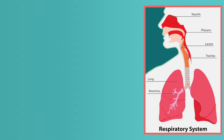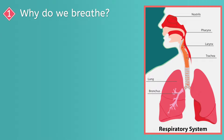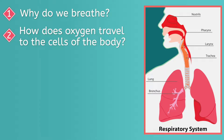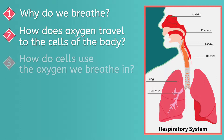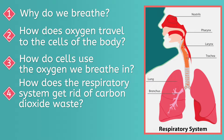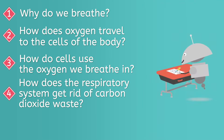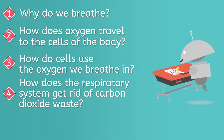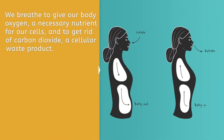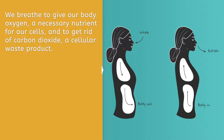To conclude, let's check in with our learning objectives. Why do we breathe? How does oxygen travel to the cells of the body? How do cells use the oxygen we breathe in? How does the respiratory system get rid of carbon dioxide waste? We breathe to give our body oxygen, a necessary nutrient for our cells, and to get rid of carbon dioxide, a cellular waste product.